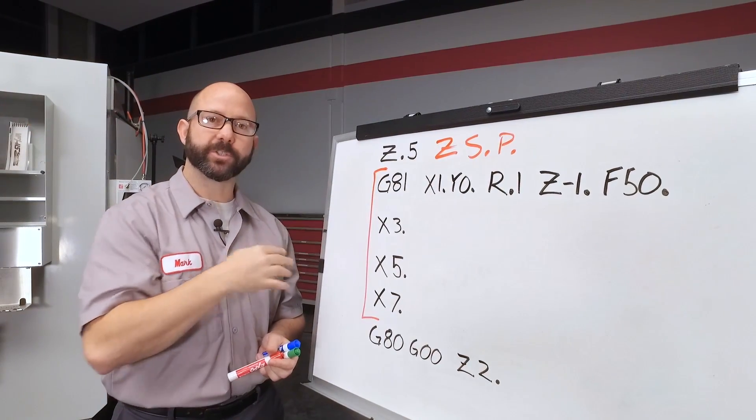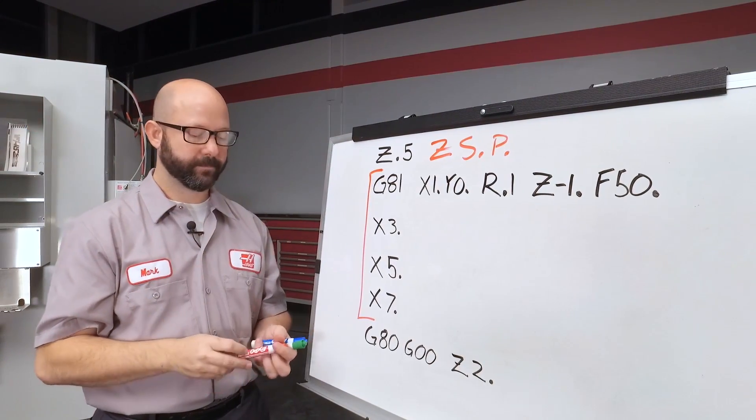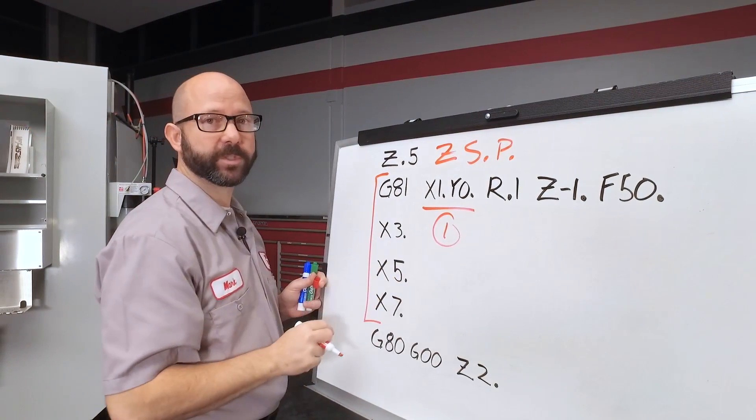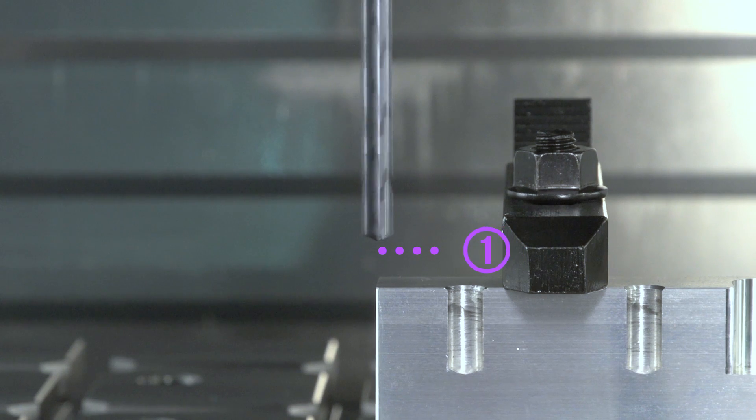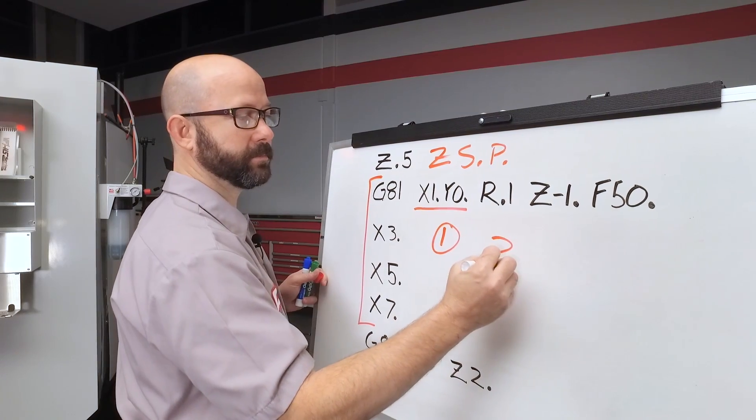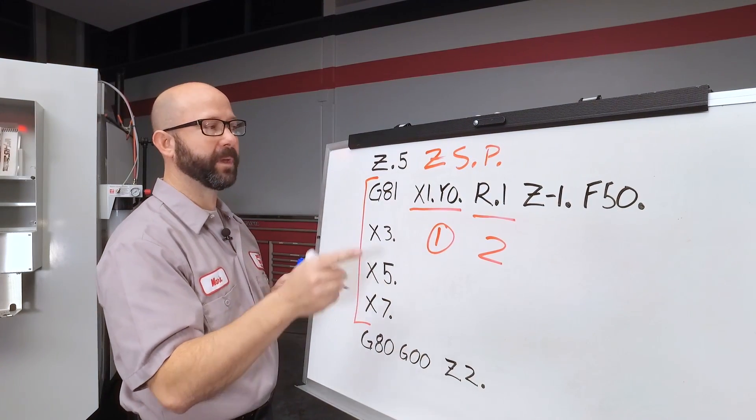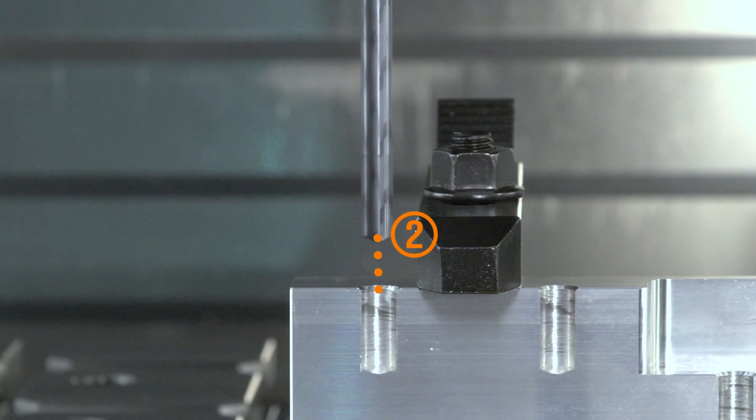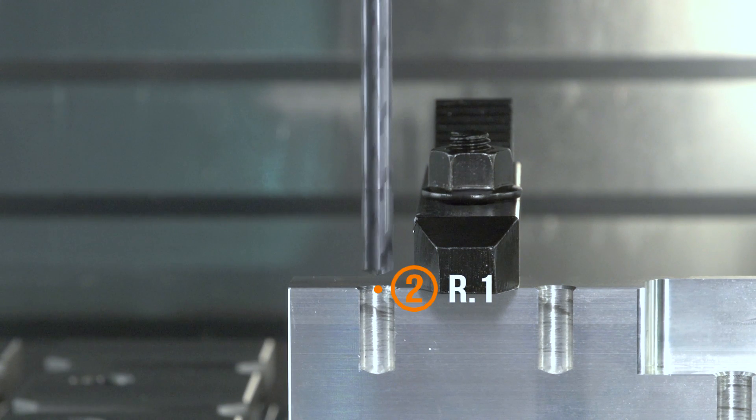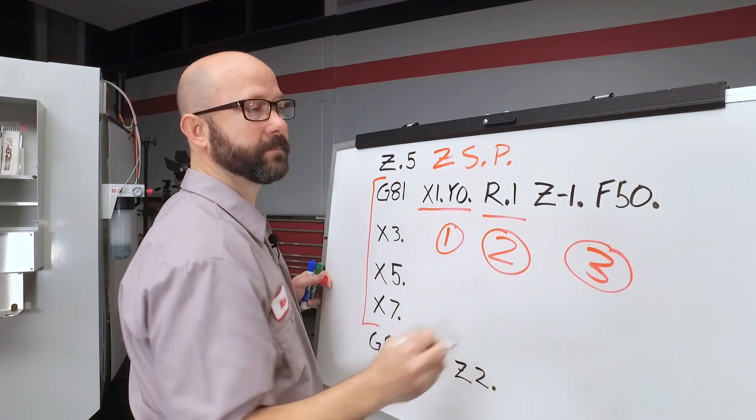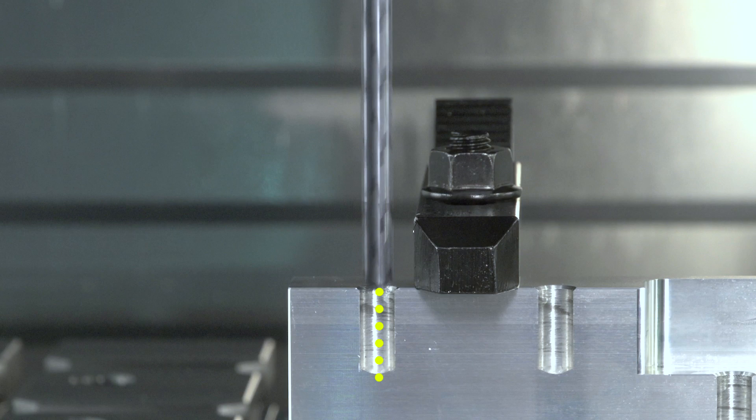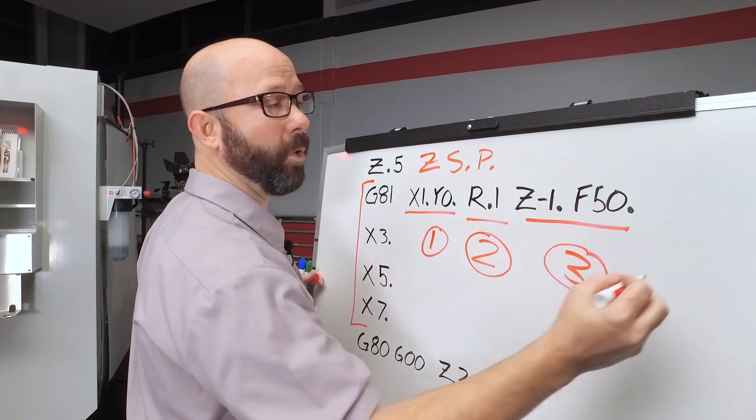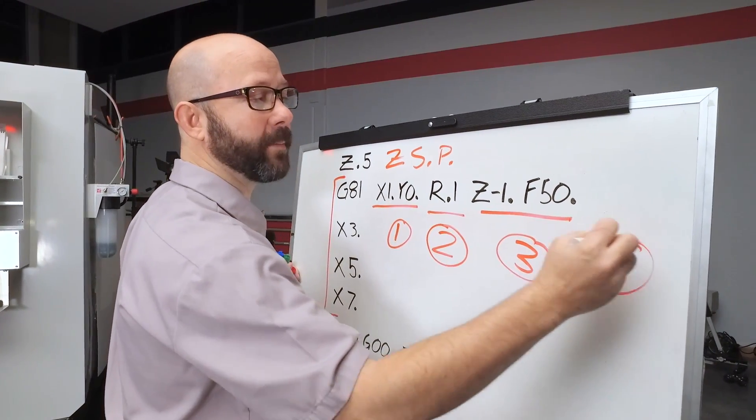With our canned cycles, the control is going to move in four very predictable ways. One, it's going to position our XY location. Two, the tool is going to rapid from the Z value where it was at to our R plane, R.1. Three, our tool is going to feed to our Z depth. And after it's drilled the hole, it's going to rapid back up to our clearance plane.